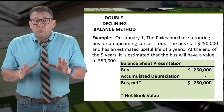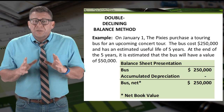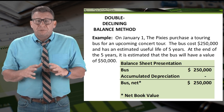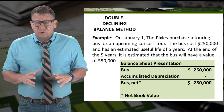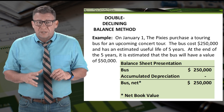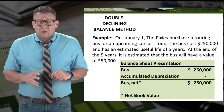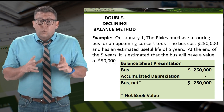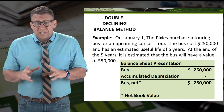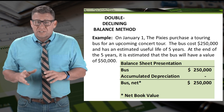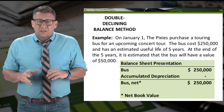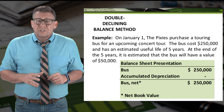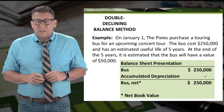Before we do the calculation, let's look at the book value of this asset before any depreciation has been taken. The book value when an asset is acquired is its cost. In this example, the book value is $250,000.